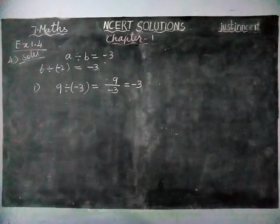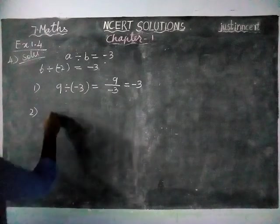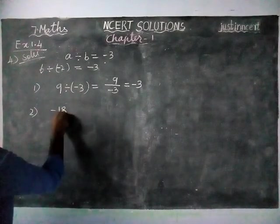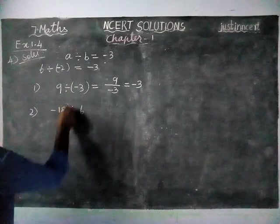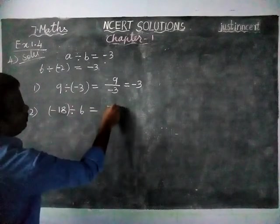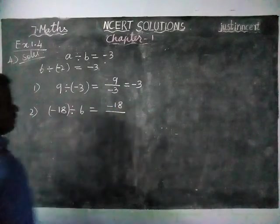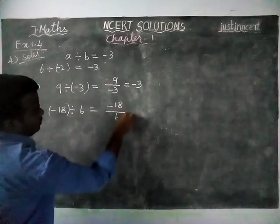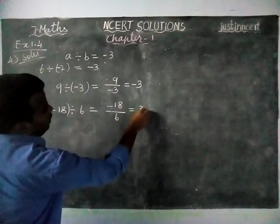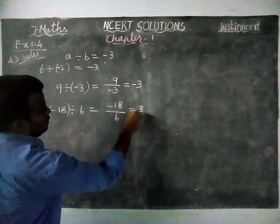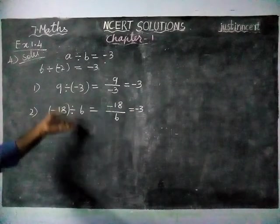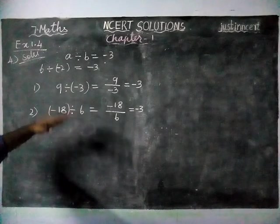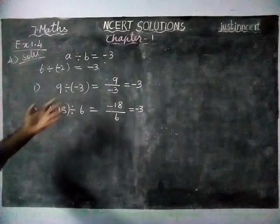So minus 3 we got it. Next second pair, minus 18 divided by 6 is equal to minus 18 divided by 6. 6 threes are 18 and signs are different, so minus 3 is answer. We can choose any model, here we are writing some examples only, you can choose any 5 pairs.